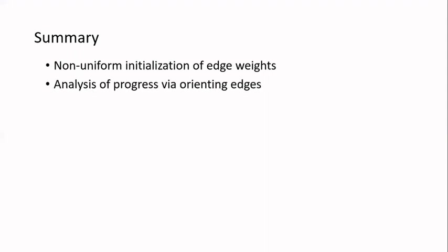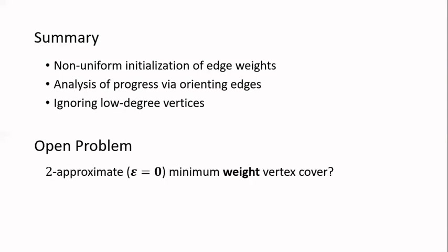To summarize, we have three new ideas: non-uniform initialization of edge weights, analysis of progress using edge orientation, and ignoring low-degree vertices. As an open problem: can we design a 2-approximation algorithm for minimum weight vertex cover? That is, can we achieve epsilon equal to zero? Thank you.